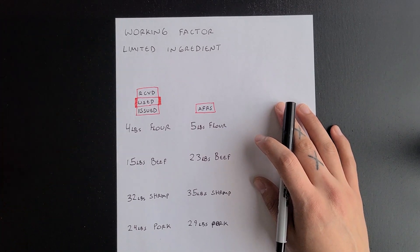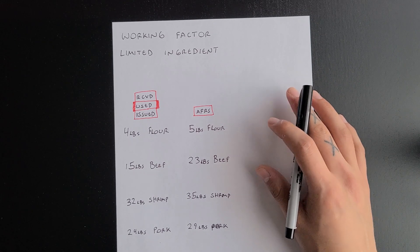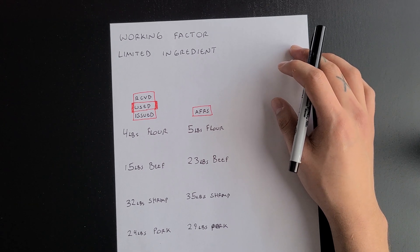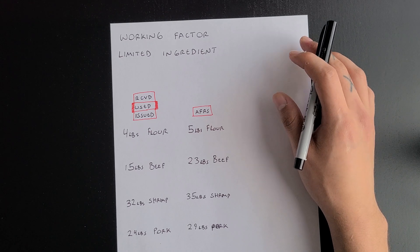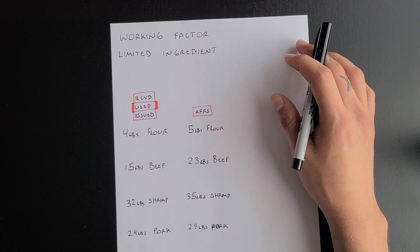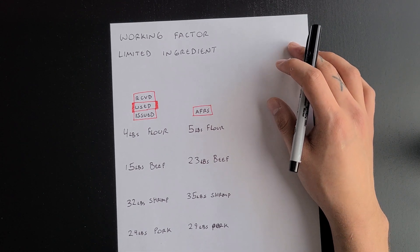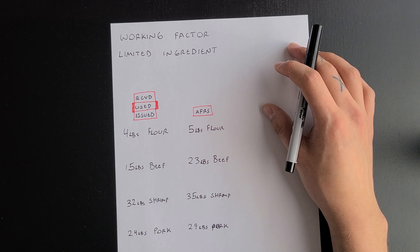Hey everyone, so today we're going to be going over how to obtain your working factor using your limited ingredient formula. The reason you would use this is let's say you as a watch captain ask your JOD to issue out 27 pounds of chicken, but instead your JOD has a 30 pound case of chicken in his or her storeroom. It's more convenient to issue out that 30 pound case of chicken instead of issuing out the 27 pounds and keeping the three pounds left over back in the storeroom.